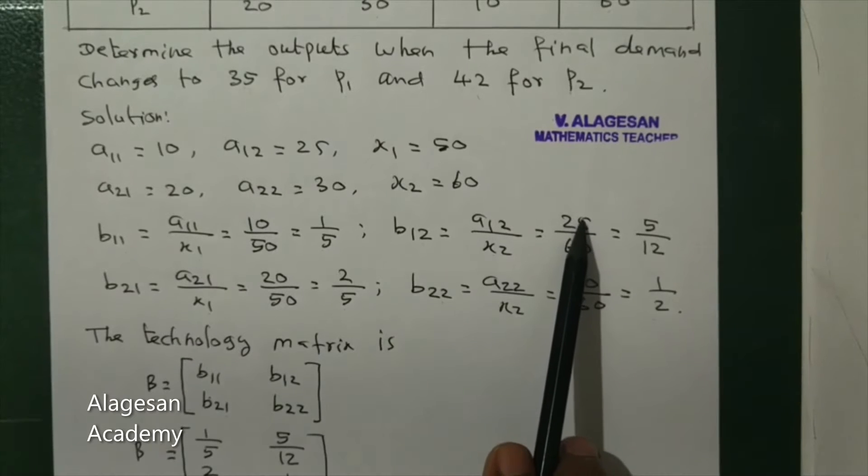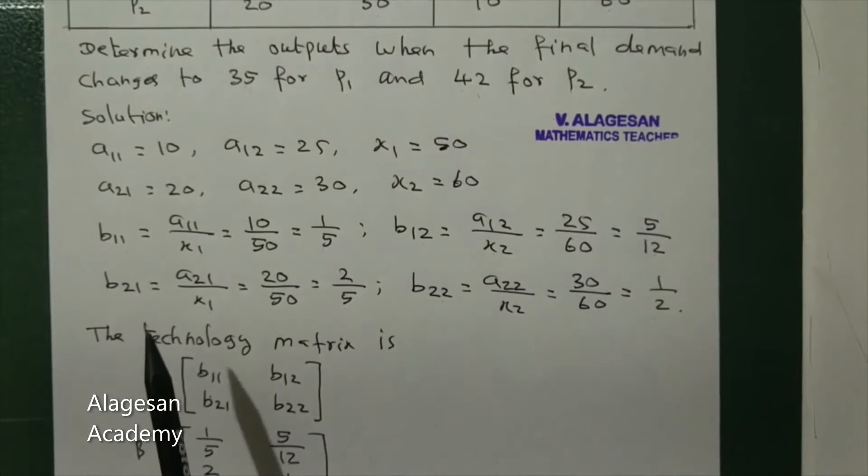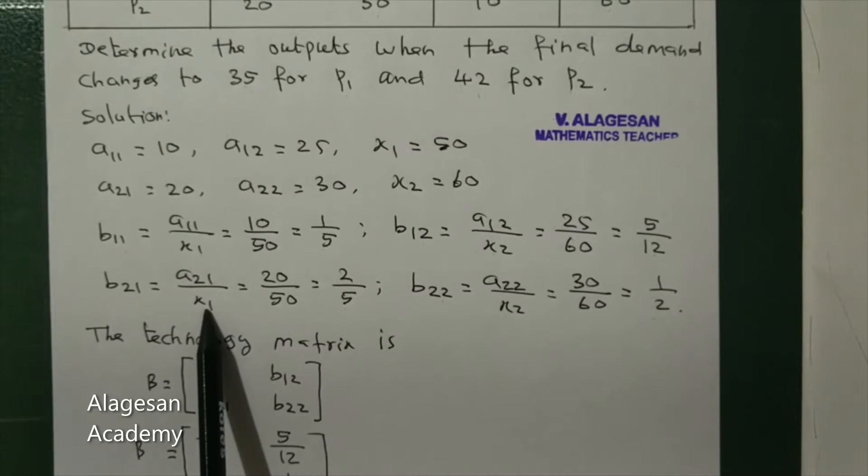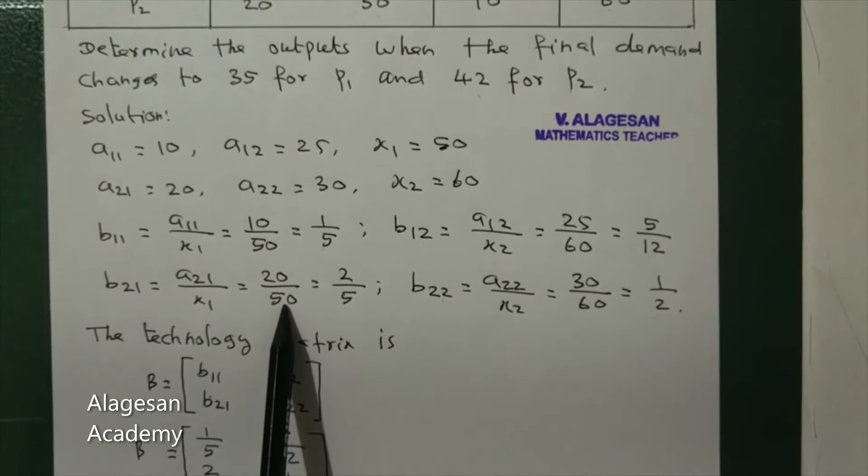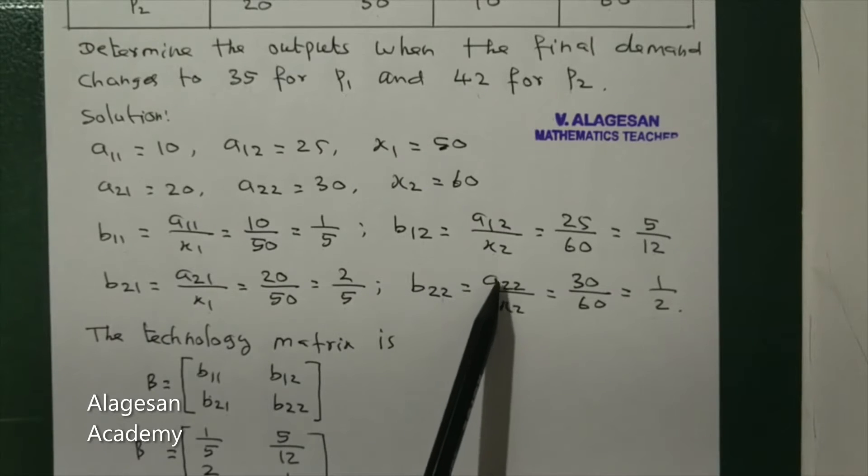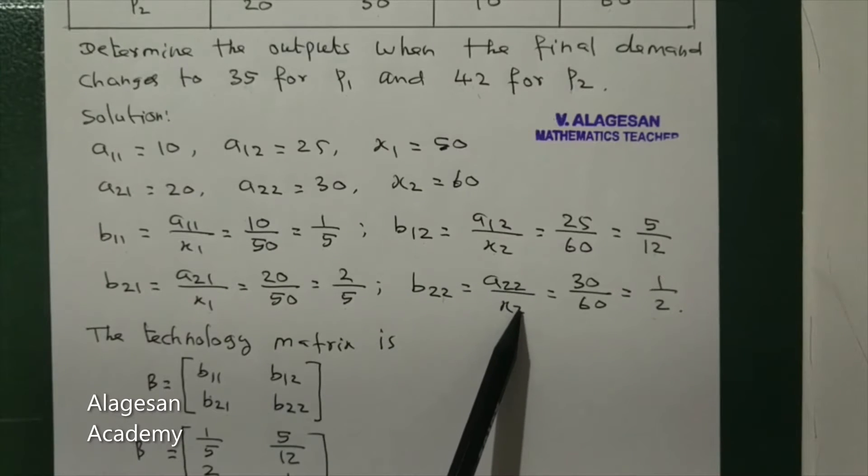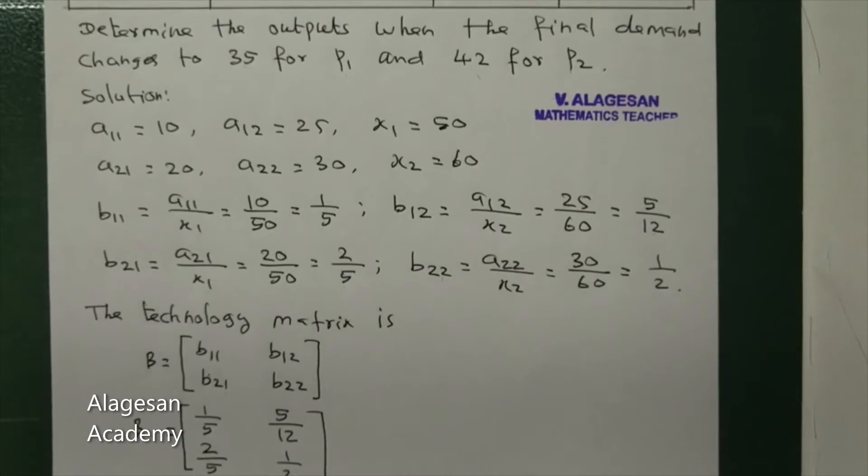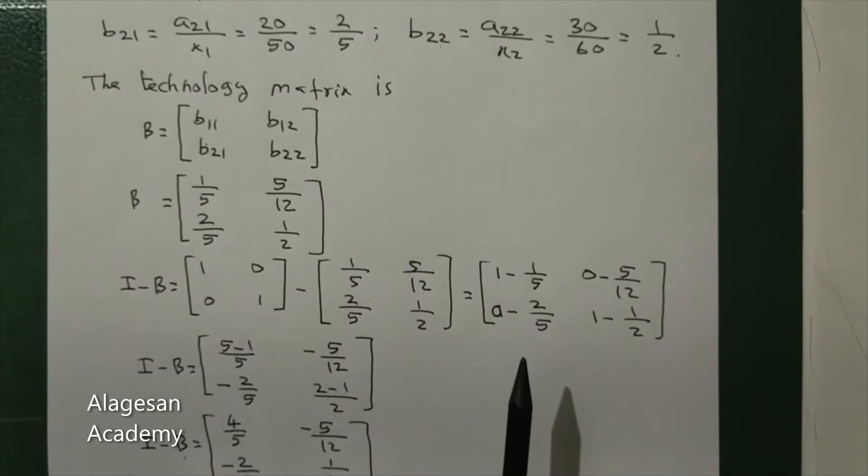Next, b21 equal to a21 by x1: 20 by 50 equal to 2 by 5. b22 equal to a22 by x2: 30 by 60, cancel to get 1 by 2.